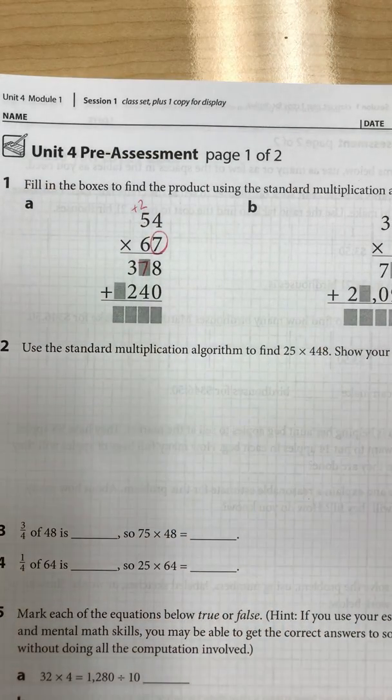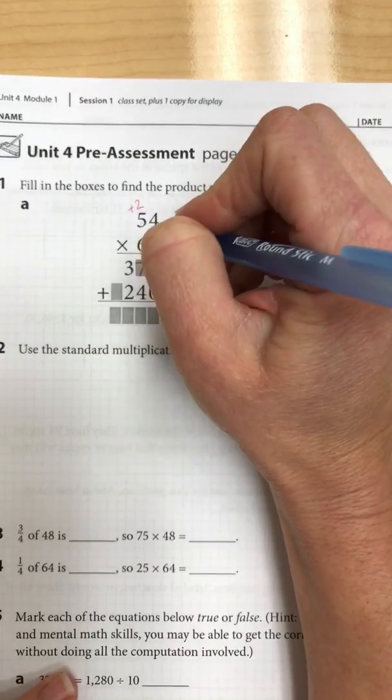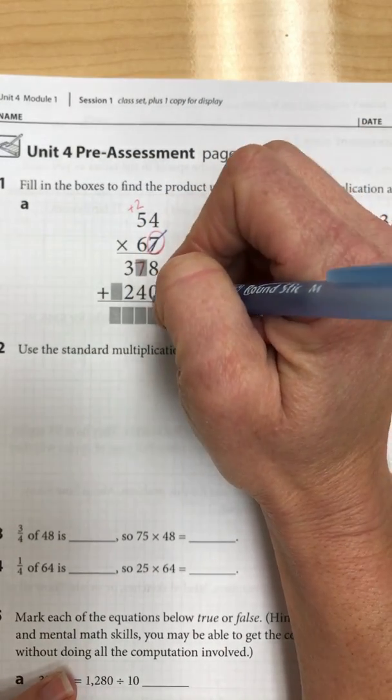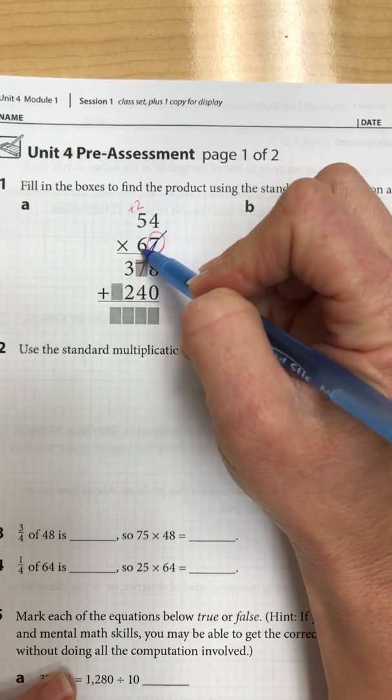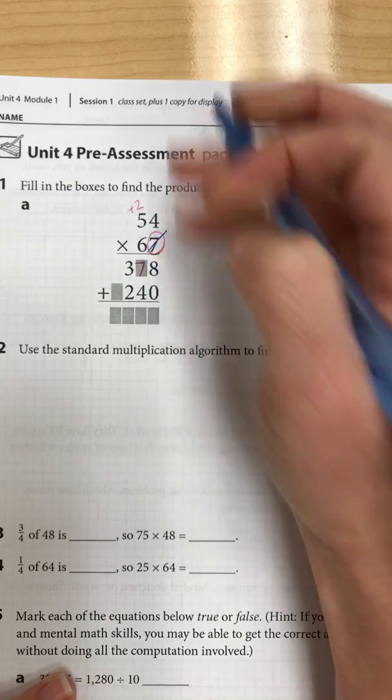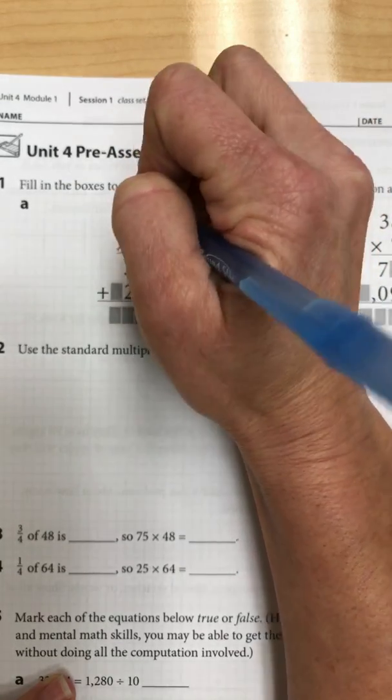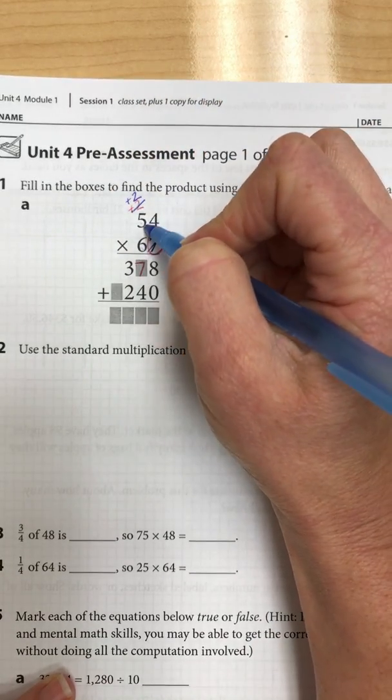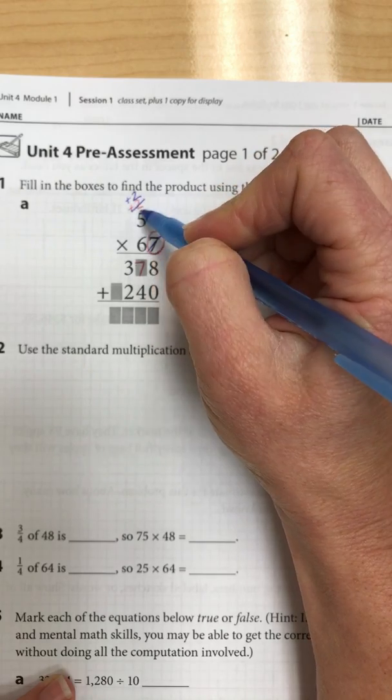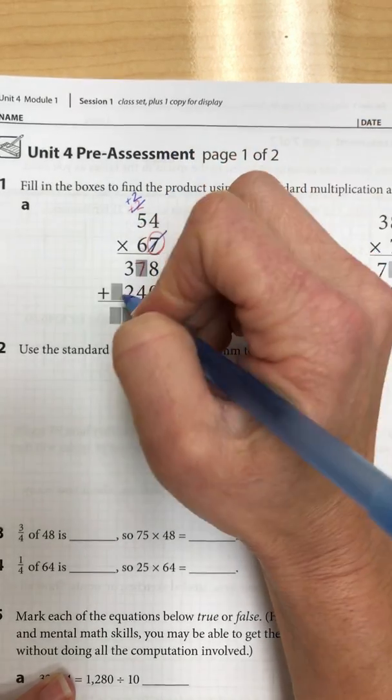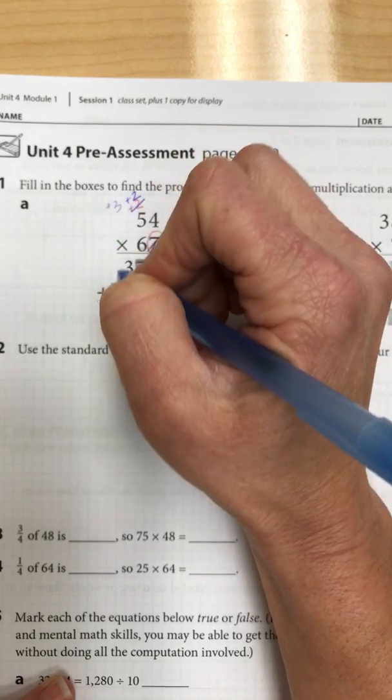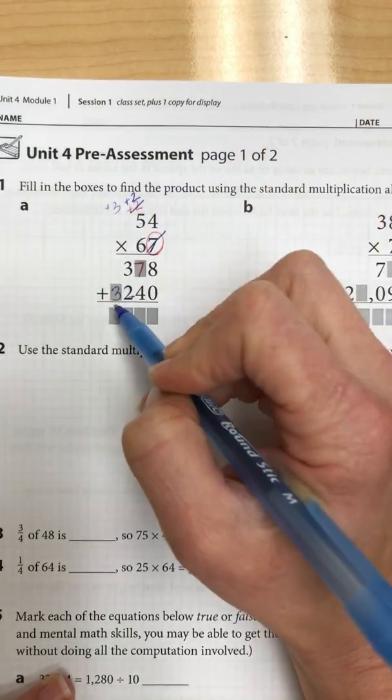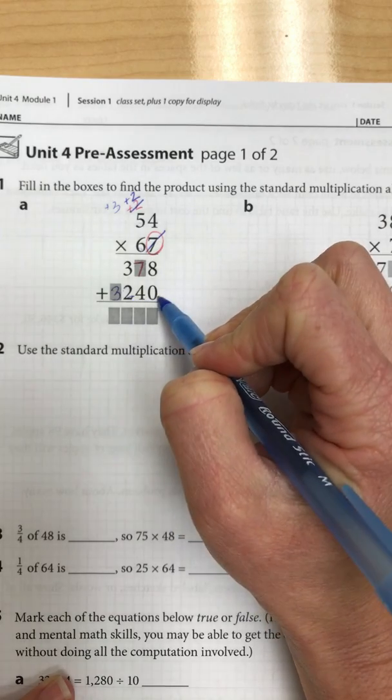Now that we're done with that one, we can cross that number off, drop the 0 and we move over to multiply the 6. 6 times 4 is 24, there's a 4 and then I would need to carry another 2. 6 times 5 is 30 plus 2 which would make 32. So 2 and I have no spot to carry my 3, so it just drops straight down to make 3,240.